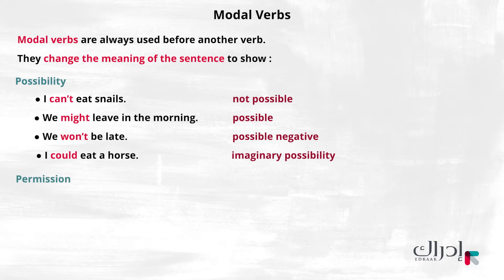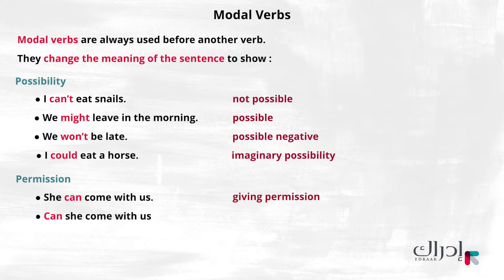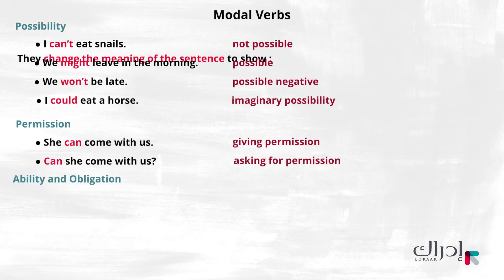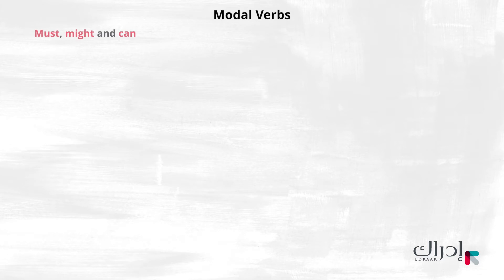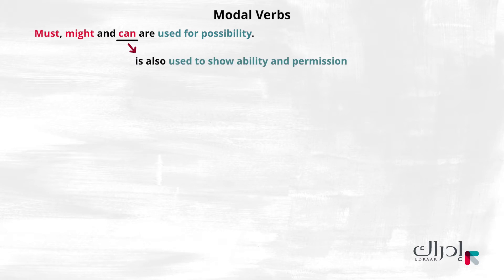The following shows permission: She can come with us — giving permission. Can she come with us? — asking for permission. The following shows ability and obligation: You can do it. I can design a game application. You must read the instructions. Must, might, and can are used for possibility.